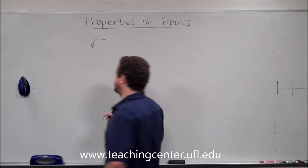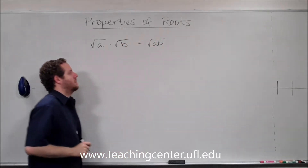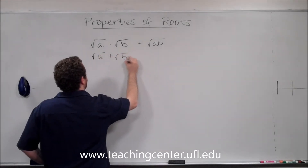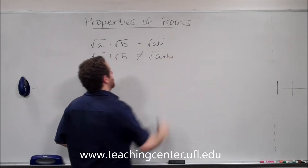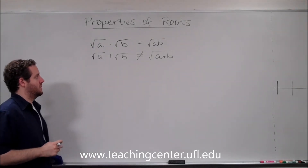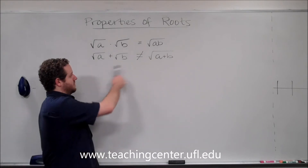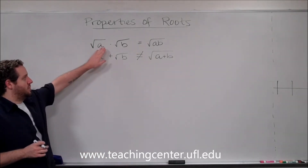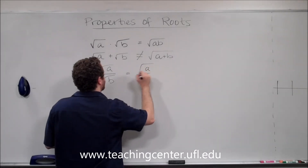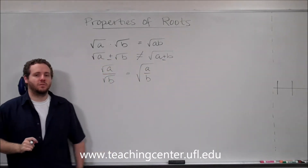One of the most basic properties is that if you have two roots multiplied by each other, that's just the square root of their product. Now keep in mind that does not work for addition — that's a very common mistake that many students make, and it's behind a lot of incorrect answers on multiple choice tests. You can do it with multiplication and division, but not addition and not subtraction. Let me put minus signs under there to cover both cases.